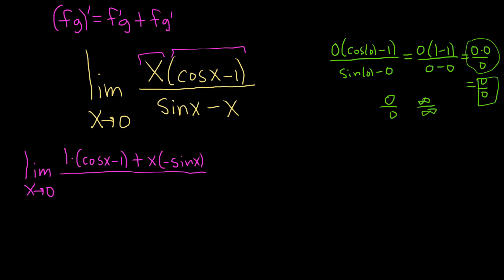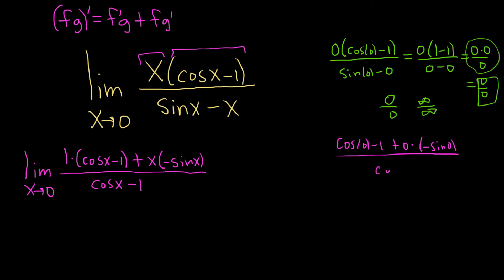On the bottom, the derivative of sine is cosine, minus the derivative of x which is 1. Now we plug in 0: we get cosine of 0 minus 1 plus 0 times negative sine of 0, over cosine of 0 minus 1. That gives us 0 plus 0 over 0 — so again we have 0 over 0, and we can use L'Hôpital's rule again.